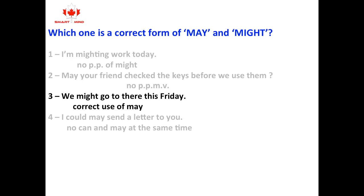Correct use of may and might. Number one: I might work today — no present possibility of might. Number two: May your friend check the keys before we use them — no best possible on the main verb checked. Number four: I could may send a letter to you — no, you cannot use can and may at the same time.